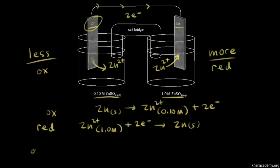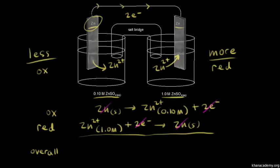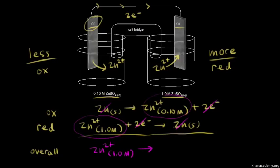So what is happening overall? We have solid zinc on both sides — we can cancel that out. We have two electrons on both sides. So the overall reaction is: Zn²⁺ at an initial concentration of 1.0 molar going to Zn²⁺ at 0.10 molar.